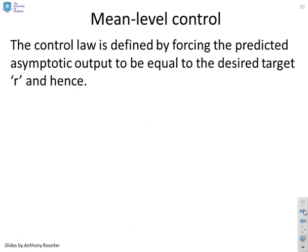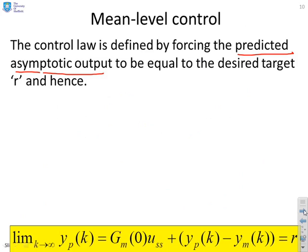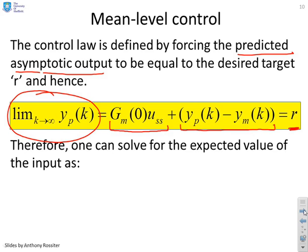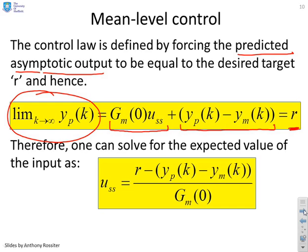So mean level control then. The control law is defined by forcing the predicted asymptotic output to be equal to the desired target. So all I'm going to do is say, here's the predicted asymptotic output, the limit as K goes to infinity of YP of K. I've already said that's given by GM zero USS plus this offset term, YPK minus YMK. And I'm simply going to set that equal to the target R. I can solve this very easily.